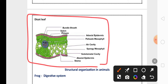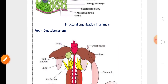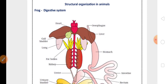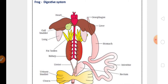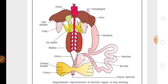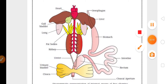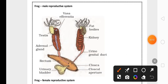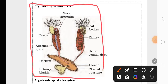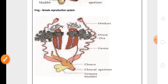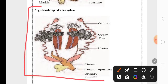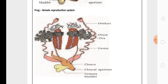From the chapter Structural Organization in Animals, the digestive system of frog diagram is very important. This is the diagrammatic representation of the internal organs of a frog showing the complete digestive system. Another important five-mark question from this chapter is the frog male reproductive system diagram, or they may ask you to draw the female reproductive system — either male or female reproductive system is highly important for five marks.